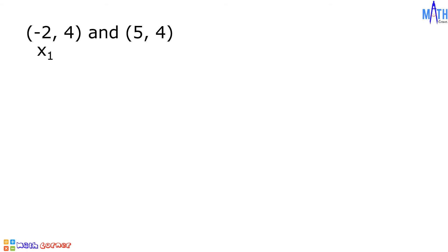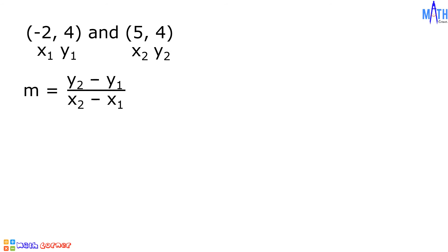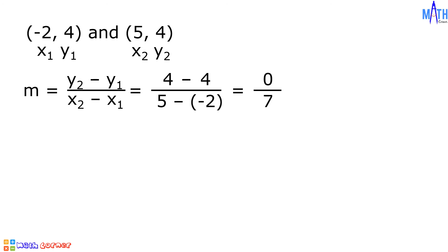Next example: let us find the slope of the line passing through the points (-2, 4) and (5, 4). Let us consider -2 as x sub 1, 4 as y sub 1, 5 as x sub 2, and 4 as y sub 2. Let us substitute the given values to the formula. We have 4 minus 4, over 5 minus negative 2. 4 minus 4 is equal to 0, over 5 minus negative 2 is equal to 7. We change the sign of the subtrahend and proceed to addition. 0 divided by 7 is equal to 0. The slope of a line passing through these two points is equal to 0.